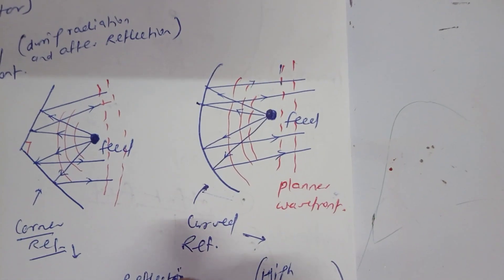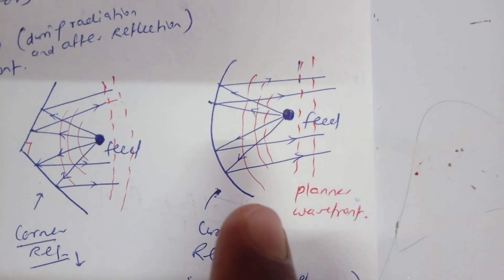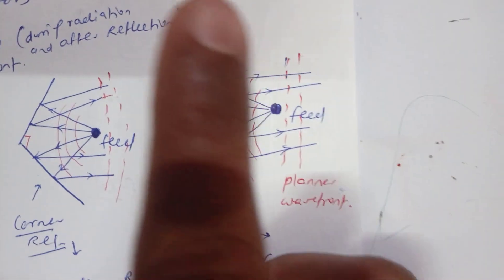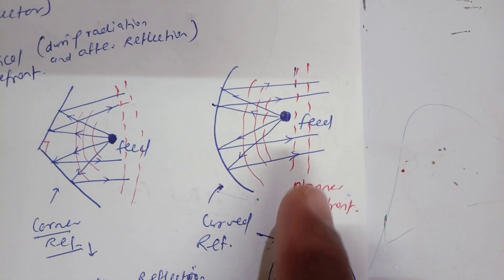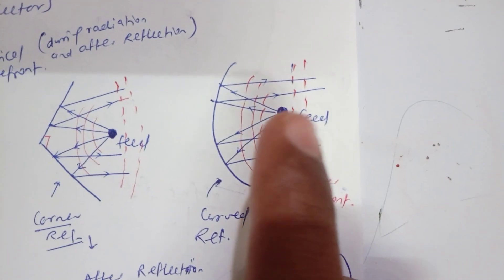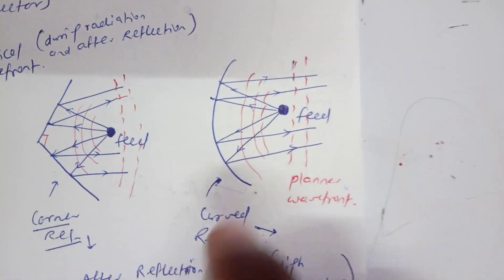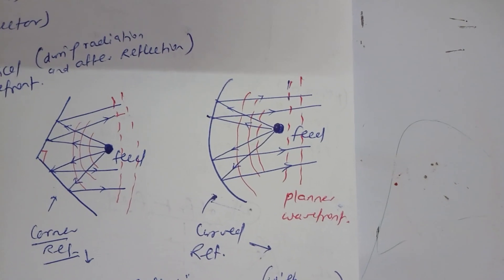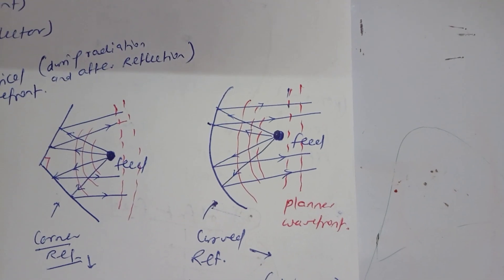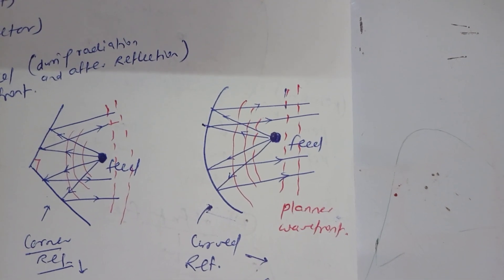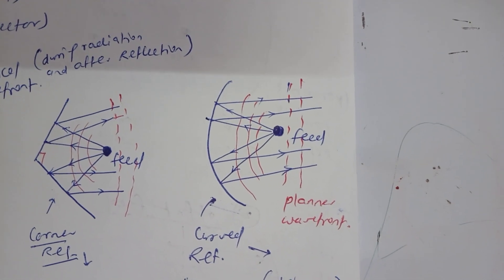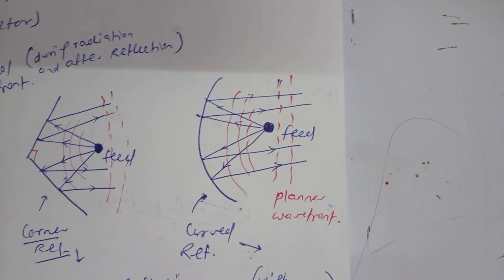In the third type of configuration — the curve reflector — if we use a parabolic reflector with the feed point at the focus, the spherical wavefront is converted into a planar wavefront. Because of this phenomenon, we get the largest directivity in the case of the curve reflector antenna.